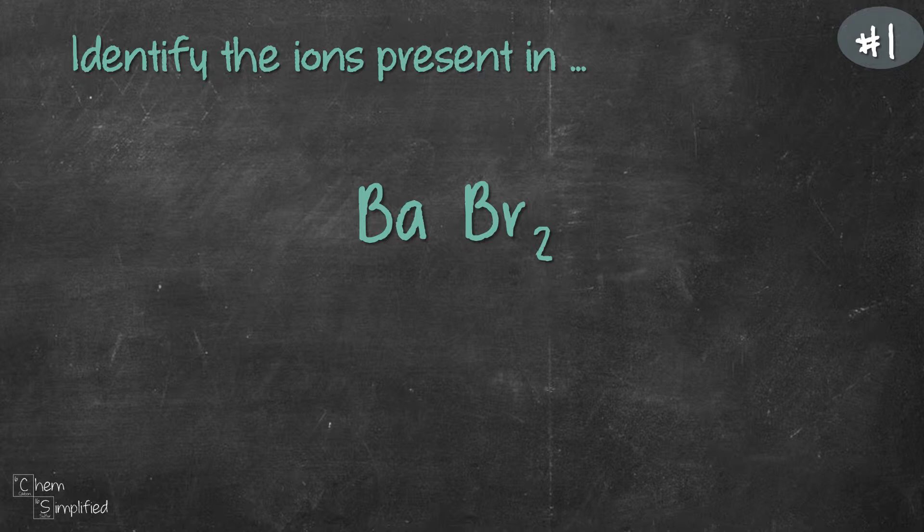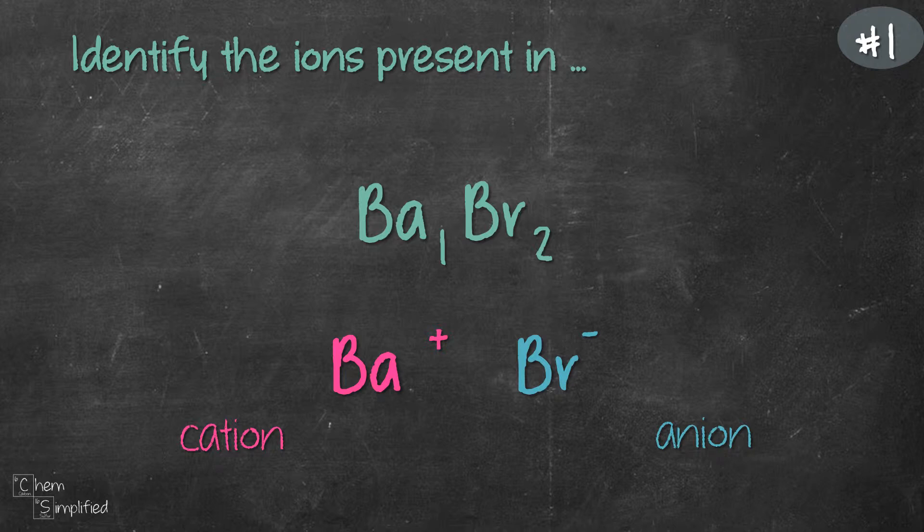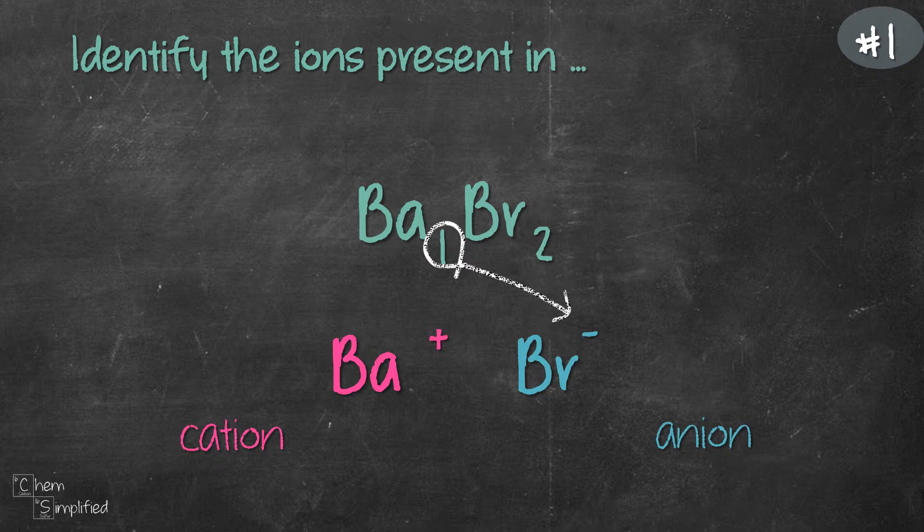So first, BaBr2 means it's actually Ba1Br2. So we know that the cation is Ba plus and the anion is Br minus. At this point, we haven't confirmed the charge yet. We just know that Ba is the cation and Br is the anion. So we're going to use the crossover method. 1 from Ba will cross over to Br.